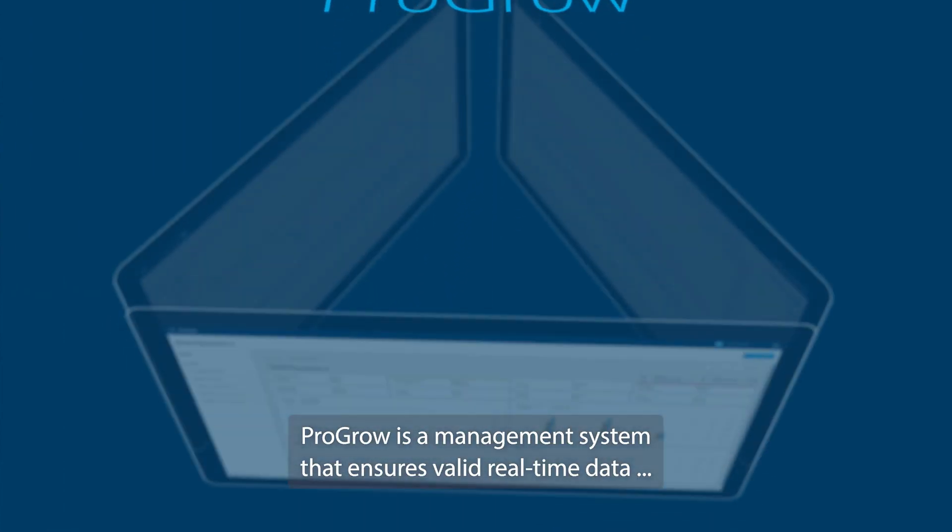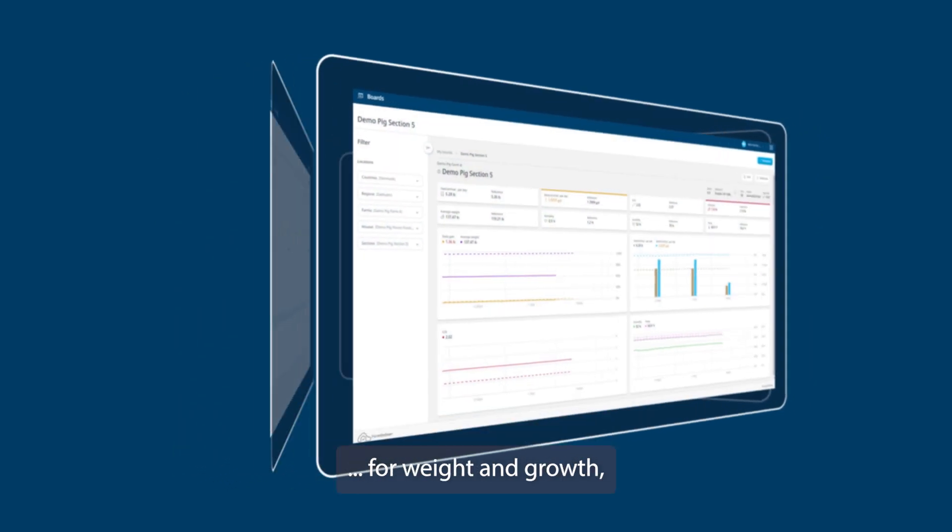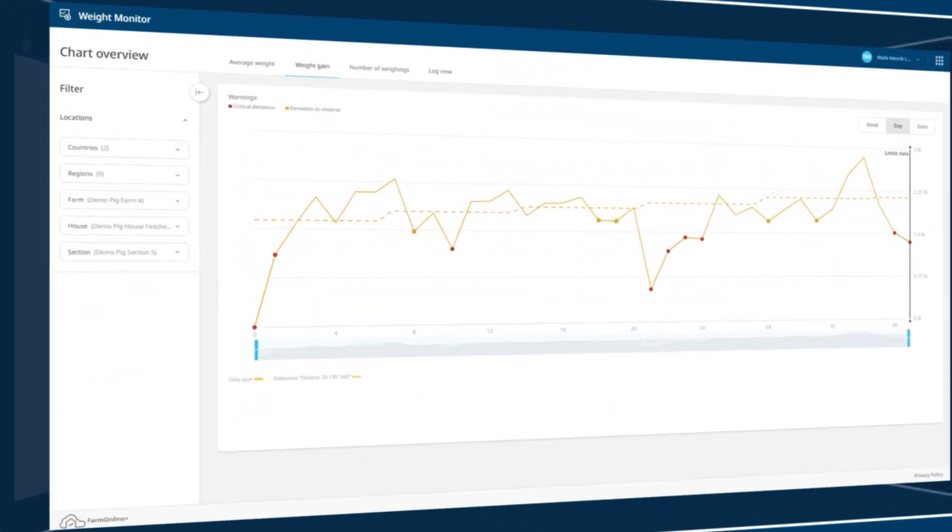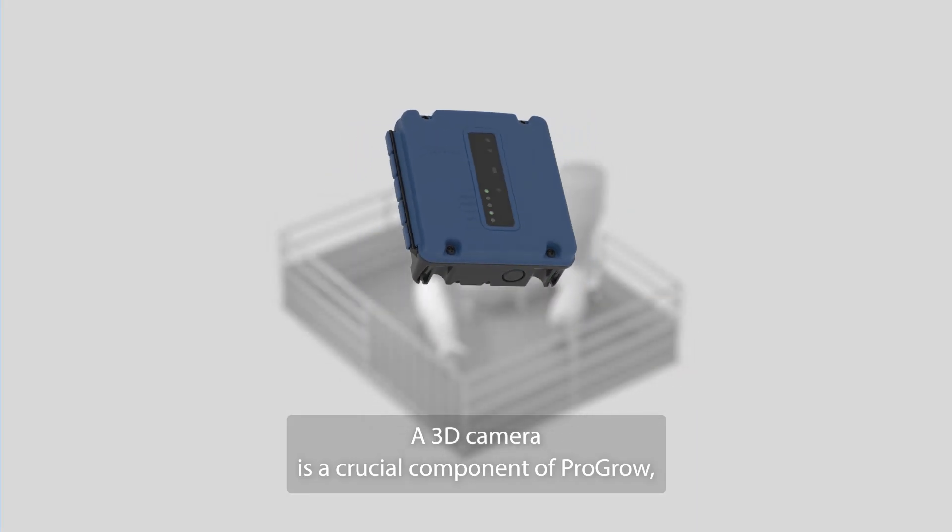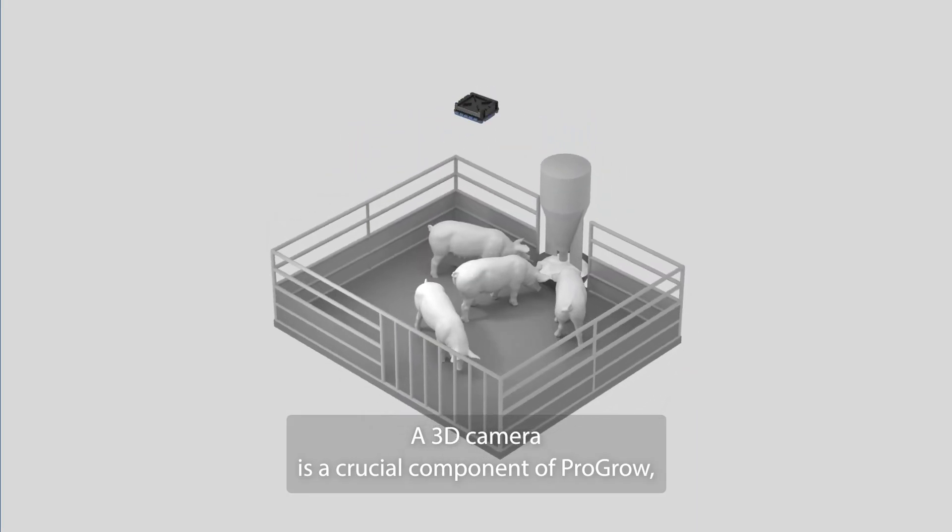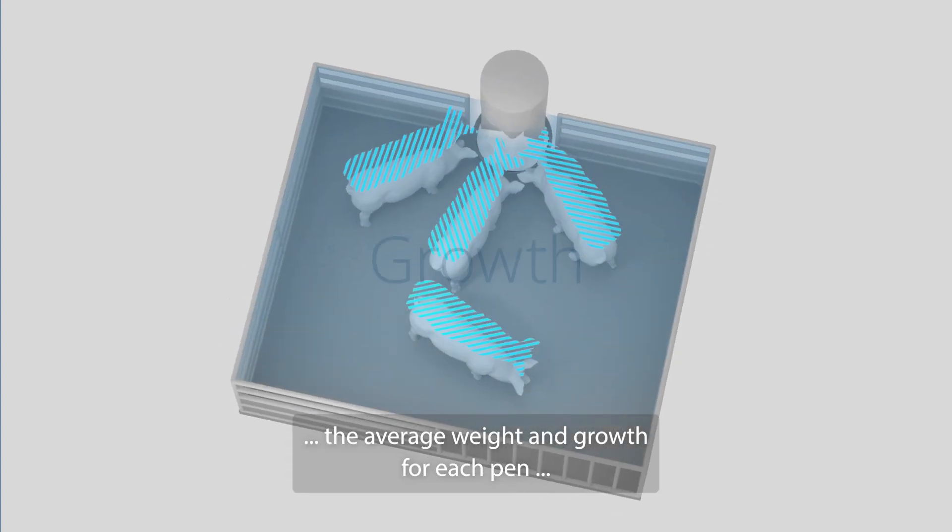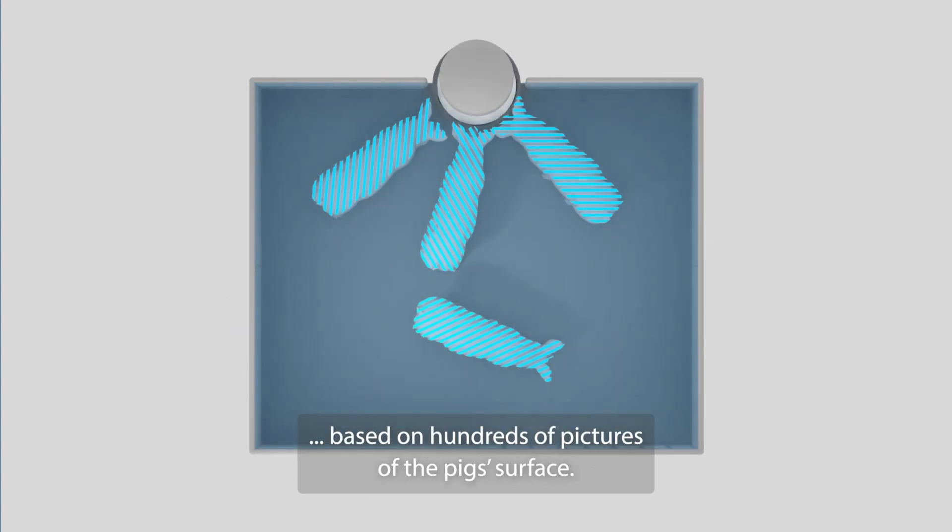ProGrow is a management system that ensures valid real-time data for weight and growth, hour by hour, day by day. A 3D camera is a crucial component of ProGrow, where the system accurately determines the average weight and growth for each pen based on hundreds of pictures of the pig's surface.